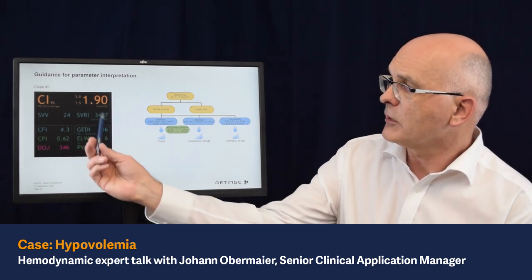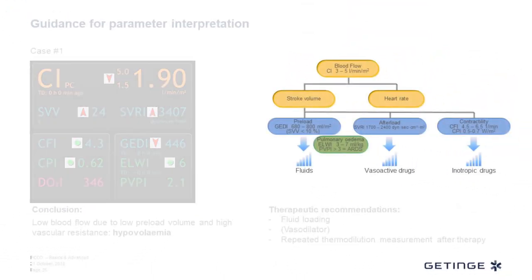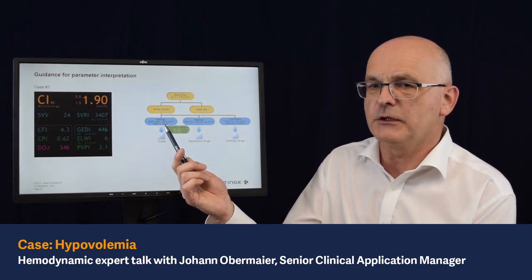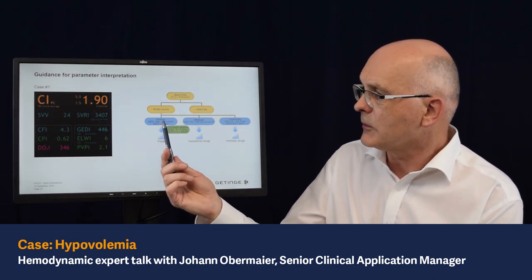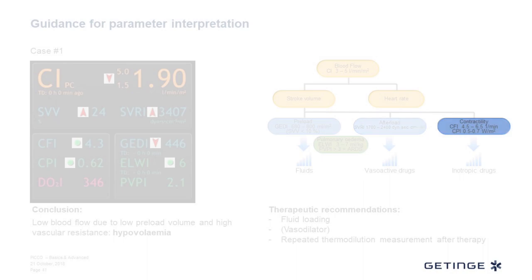Here are some examples of measurement results in certain patients. We have the results screen with different parameters, and on the right-hand side we have the overview on the physiology and the physiological model, which starts with the blood flow and also shows its determinants: preload, indicated by the global end-diastolic volume index; afterload, the systemic vascular resistance index; as well as contractility information with the cardiac function index and cardiac power index.